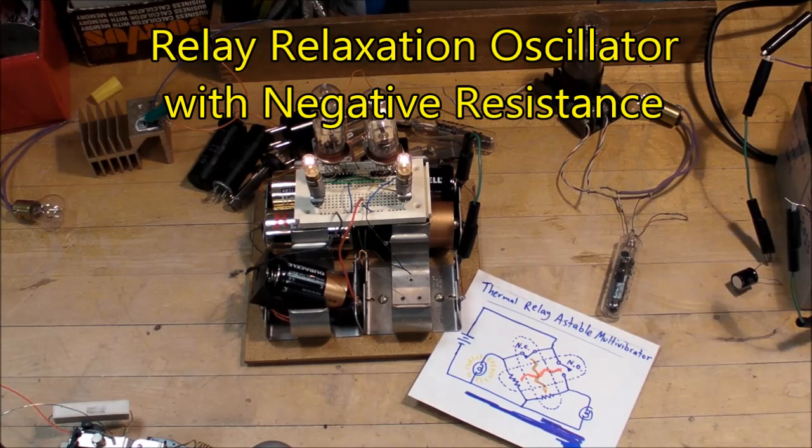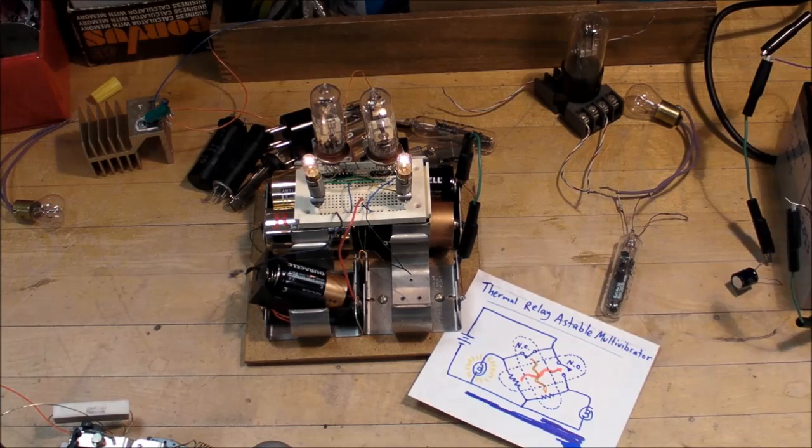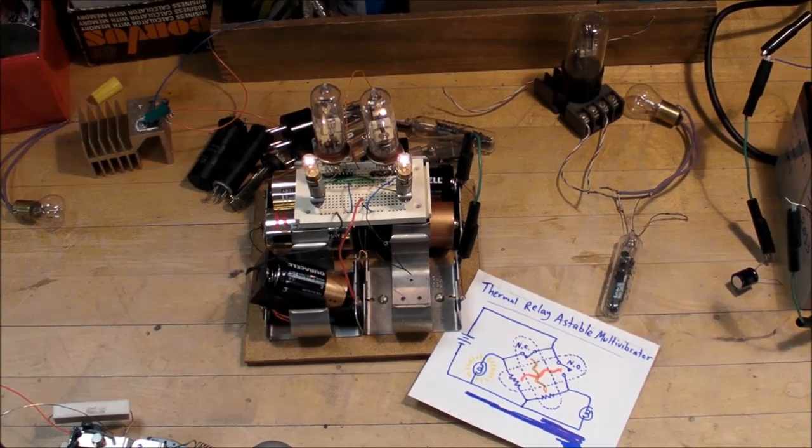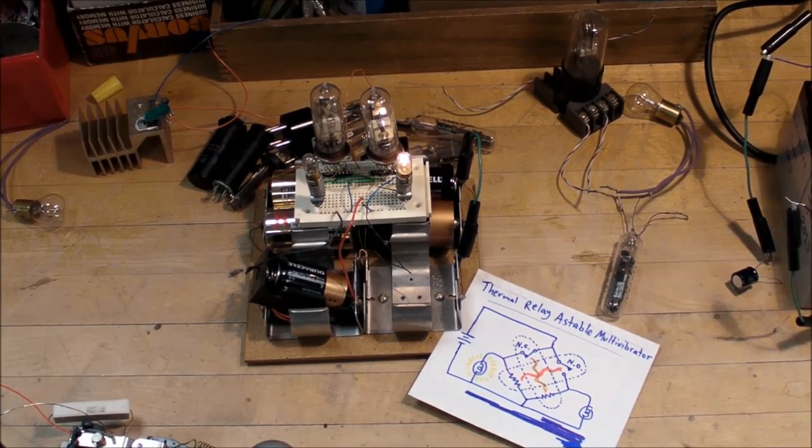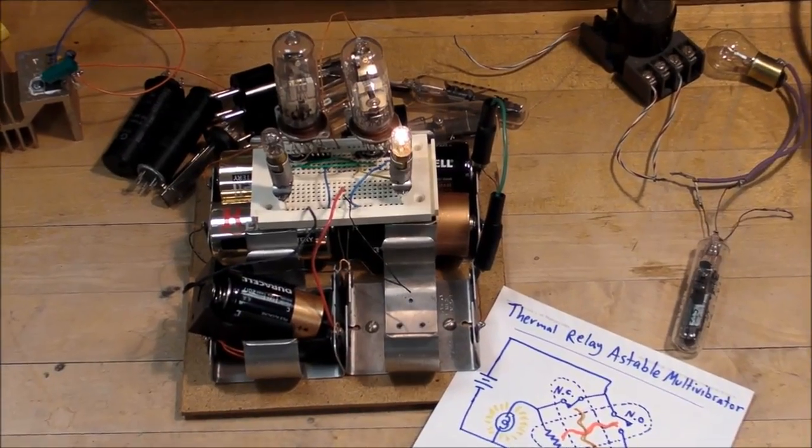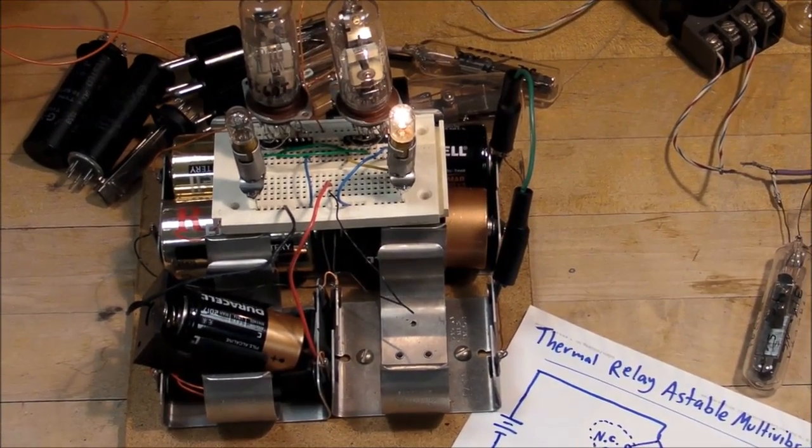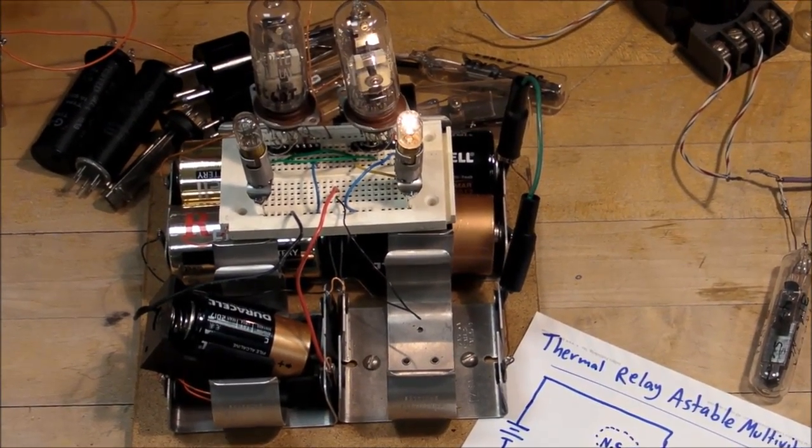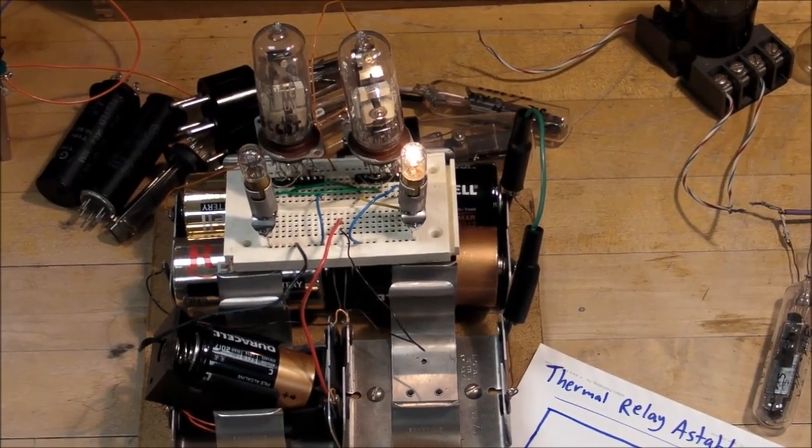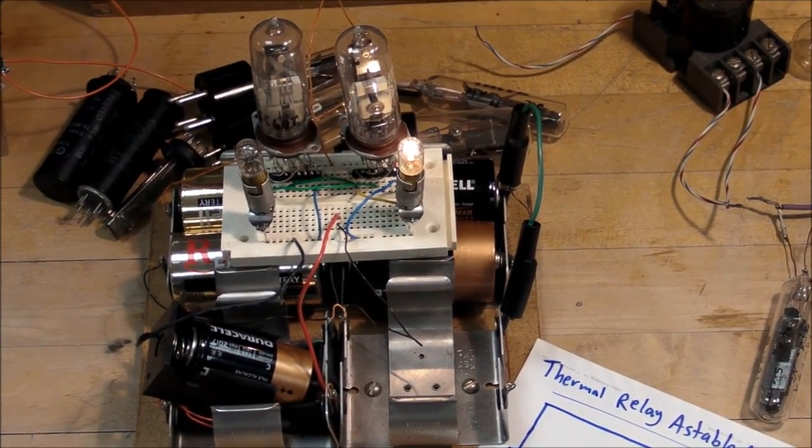One thing I like to do with electric circuits is to take vintage technology, vintage parts, and use them in new and interesting ways. One of the ways I've already shown in another video is to use thermal time delay relays to make a very slow-acting astable multivibrator.